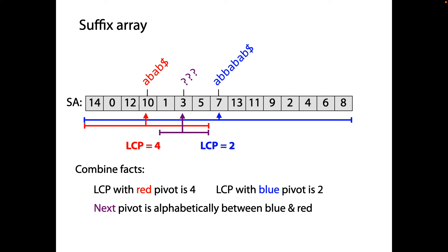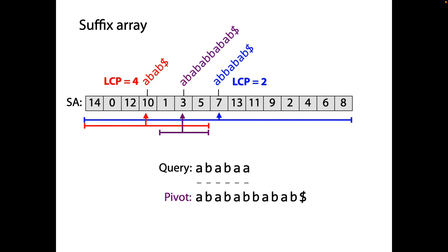If our pattern has a common prefix with the blue one of length 2, and a common prefix with the red one of length 4, then the bit in common with both — which we get by taking the minimum of 4 and 2, which is 2 — must also be the same as the query. In other words, the query and the plum pivot have at least the prefix AB in common. So even without looking at that plum pivot, we know the LCP between our query and that pivot is at least 2. It might be greater, but it's at least 2. This means we get to skip the first two character comparisons.